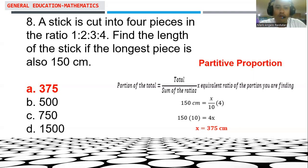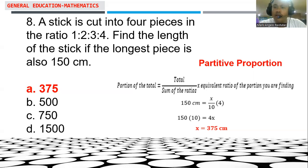Applying the formula: 150 centimeters equals x over 10 multiplied by 4. Simplifying: 150 multiplied by 10 equals 4x. Multiplying both sides by one-fourth, the value of x comes out to 375 centimeters.